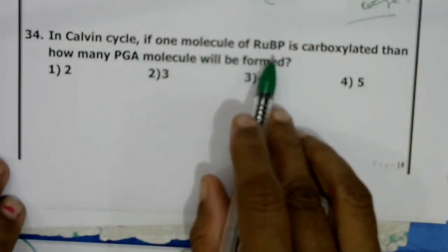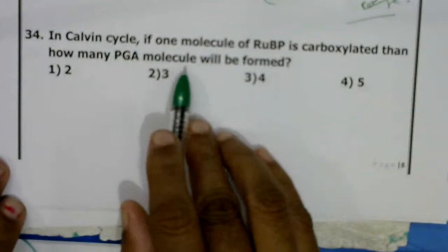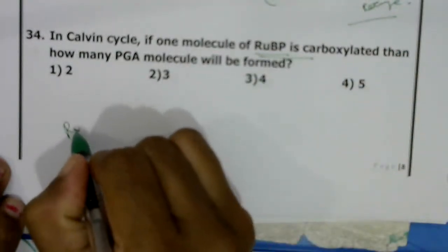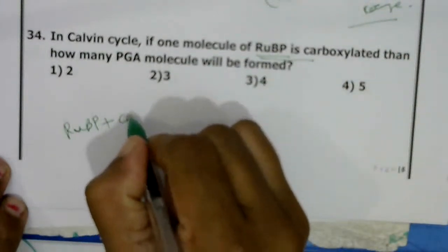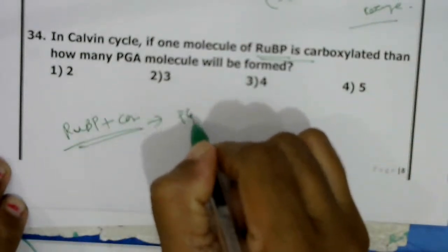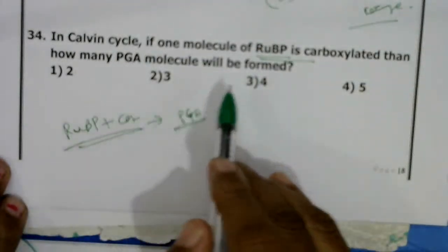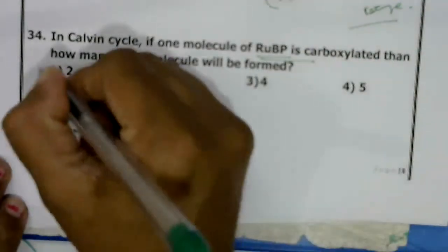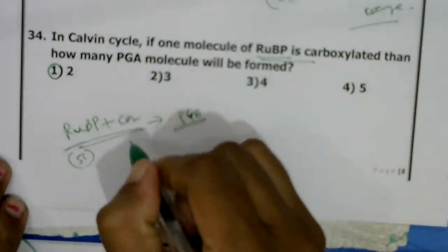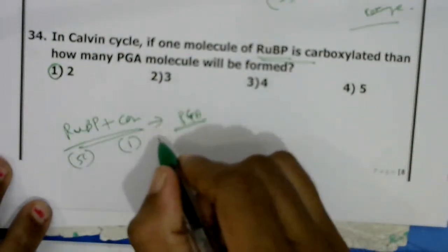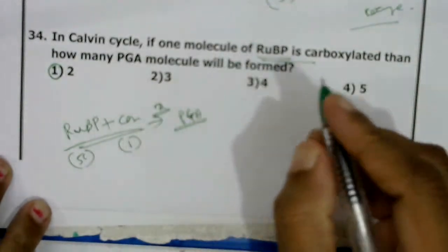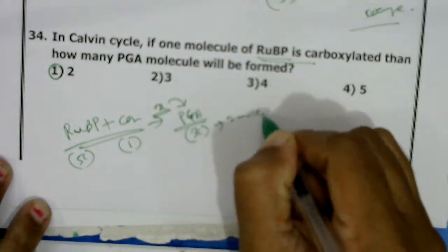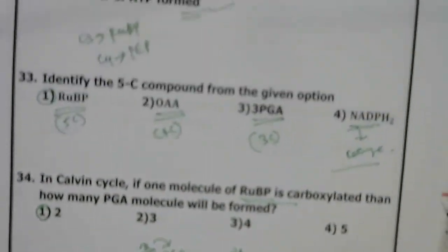In the Calvin cycle, if one molecule of RUBP is carboxylated, how many PGA molecules are formed: 2, 3, 4, or 5? When one RUBP (5C) accepts one CO2, an unstable 6-carbon compound is formed which immediately converts into two molecules of 3-carbon 3-PGA. Correct answer: first option, 2 molecules of PGA.